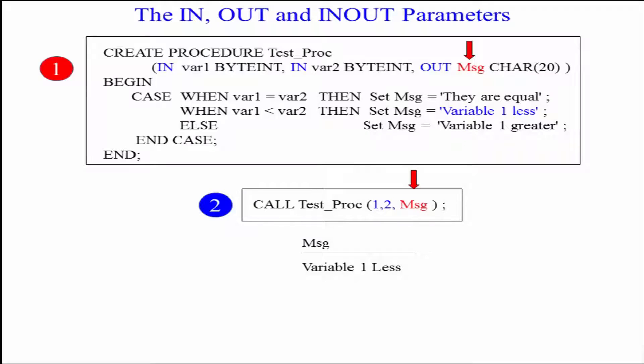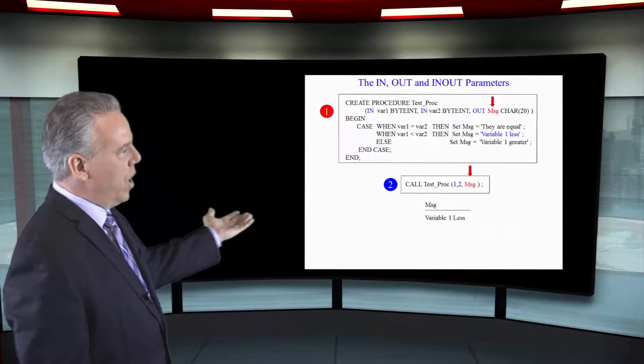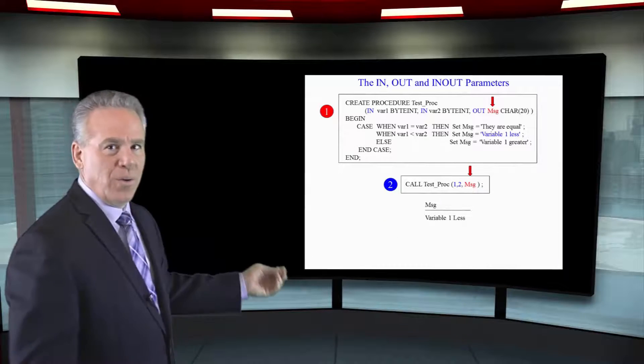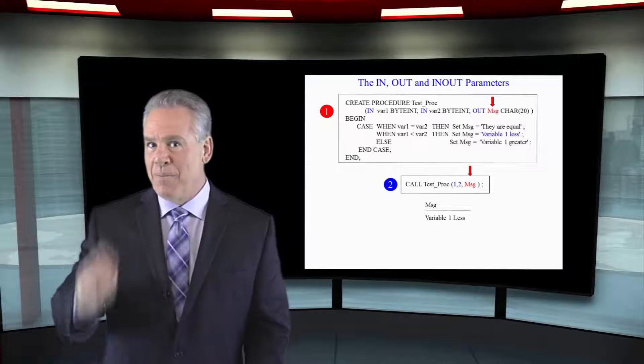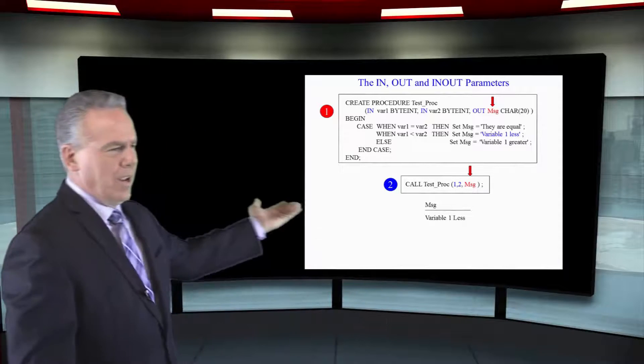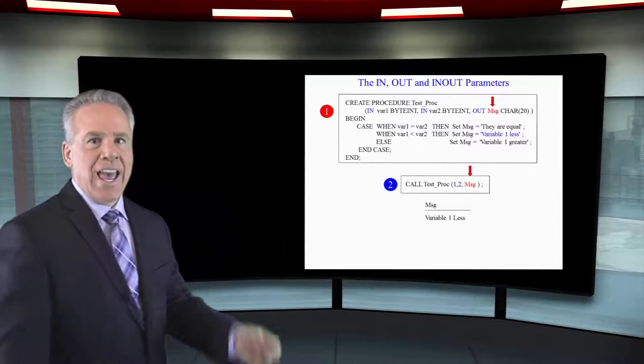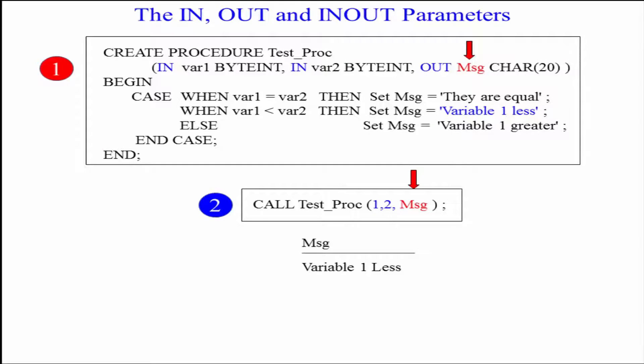At the end of the case we have end case semicolon. In between when var one equals var two then set message that output parameter. They are equal semicolon. When var one is less than var two then set message. We're talking about the output parameter variable one less else variable one greater.